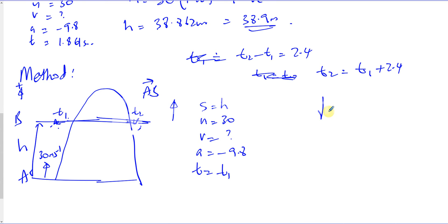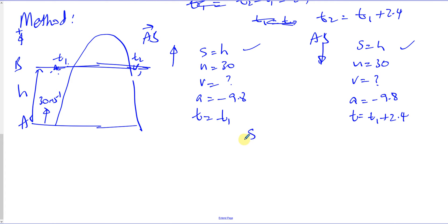And also note on the way down, going from A to B, we've got S is H again. U again is 30. That's how it was projected. V, we don't know what it's going to be. But A is minus 9.8 as normal. It's freely under gravity. But T here is going to be, I could write T2, but if I want to write it in terms of T1, I can say it's like T1 plus 2.4. And I know that the H is the same in both of these situations. So what I can do is, I can make equations using S equals UT plus half AT squared.